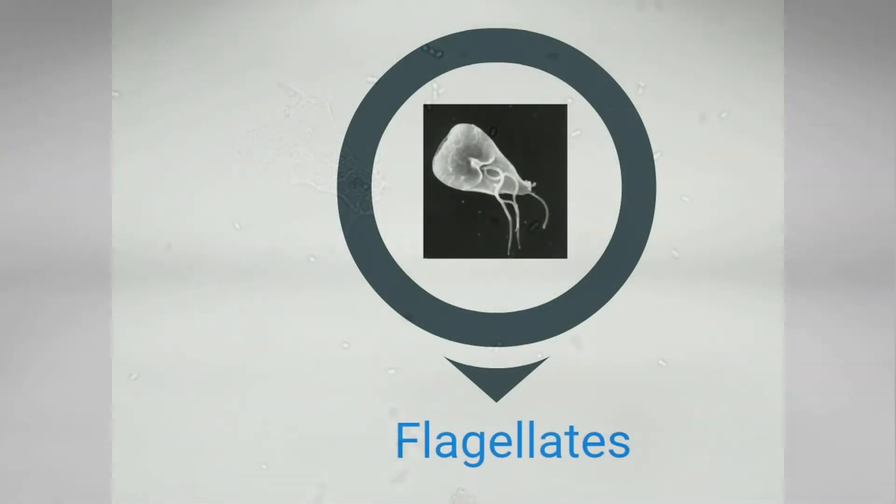Flagellates move using a flagella, which is a whip-like structure. An example is Giardia, which is a parasite that causes gastrointestinal distress.